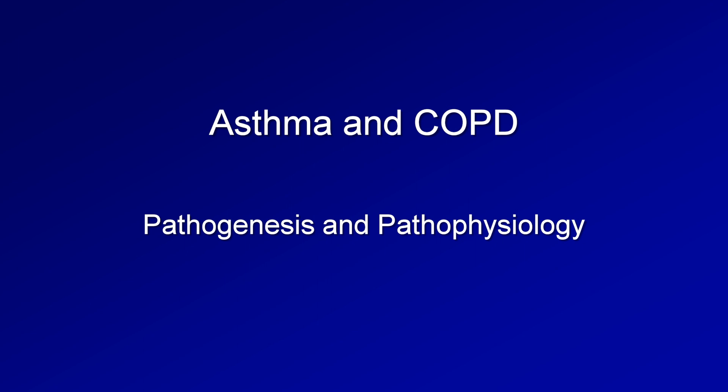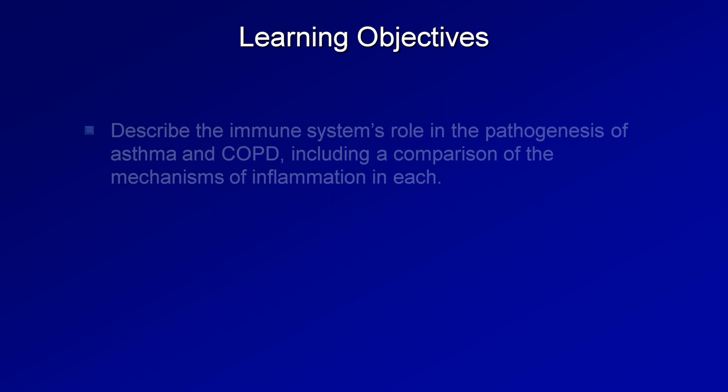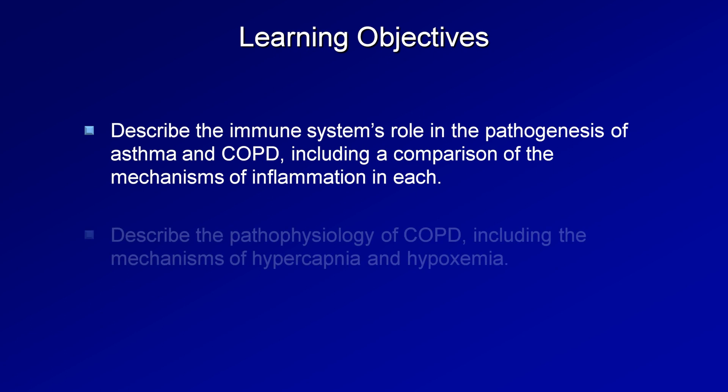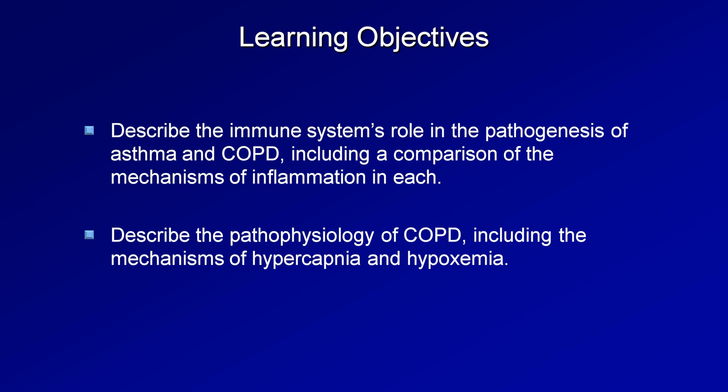This is the second video in this short series on obstructive lung disease, and today I'll be discussing the pathogenesis and pathophysiology of asthma and COPD. The primary learning objectives are: first, to be able to describe the immune system's role in the pathogenesis of asthma and COPD, including a comparison of the mechanisms of inflammation in each; and second, to be able to describe the pathophysiology of COPD, including the mechanisms of hypercapnia and hypoxemia.